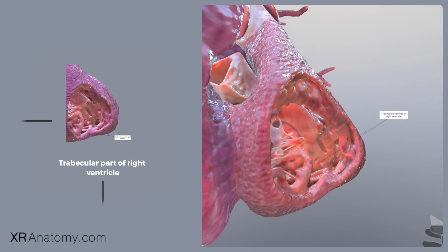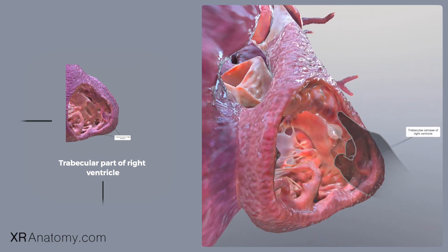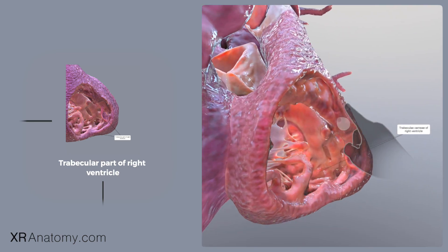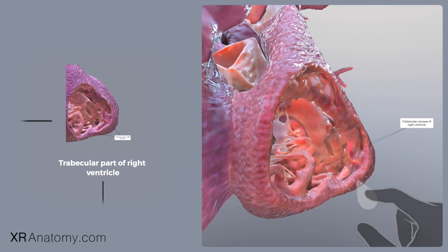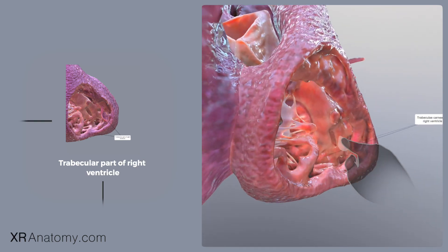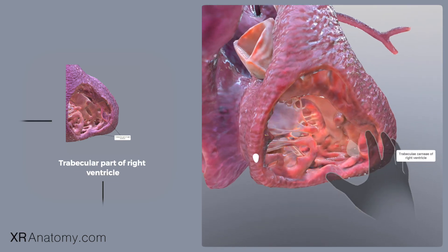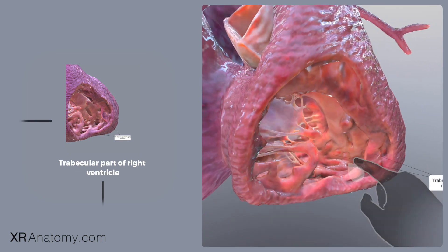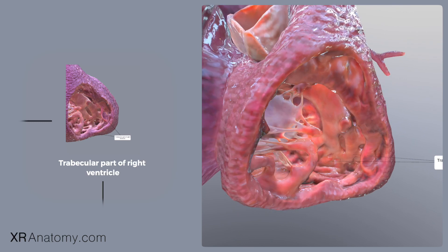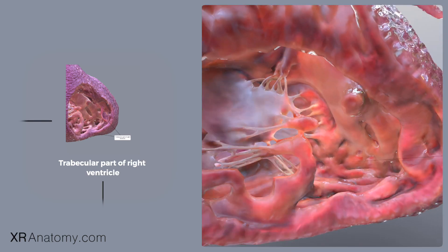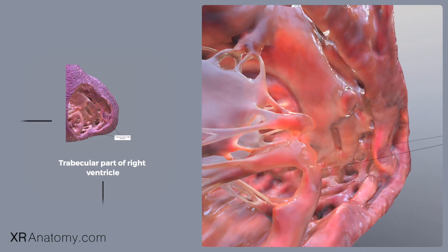The third segment of the right ventricle, connecting the inlet to the outlet, is termed the trabecular part. This region is characterized by its irregular mesh-like muscle projections, giving it a unique texture and appearance. This complex network within the trabecular part is crucial for the heart's efficient functioning.